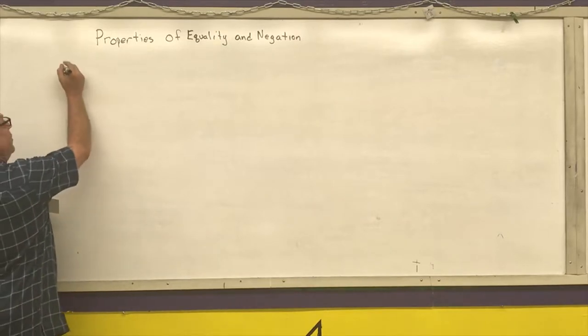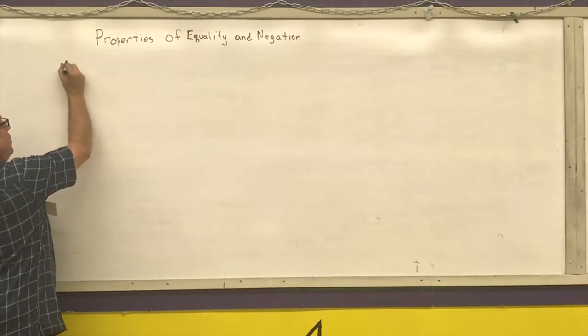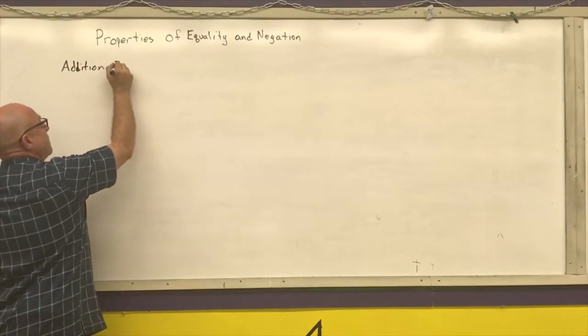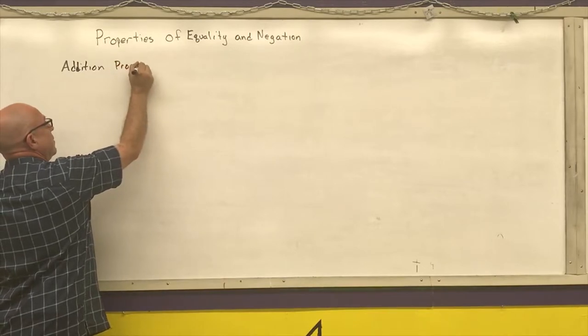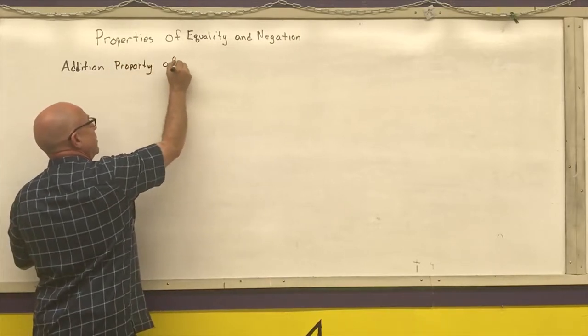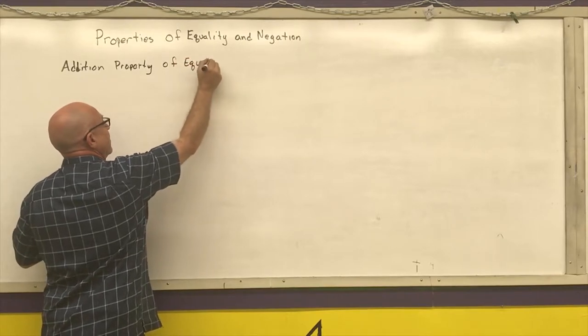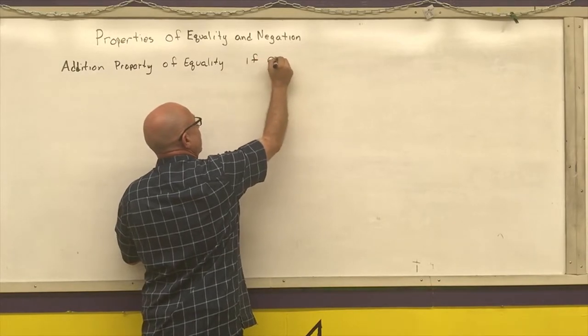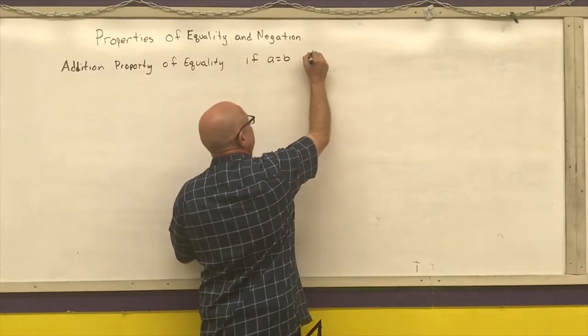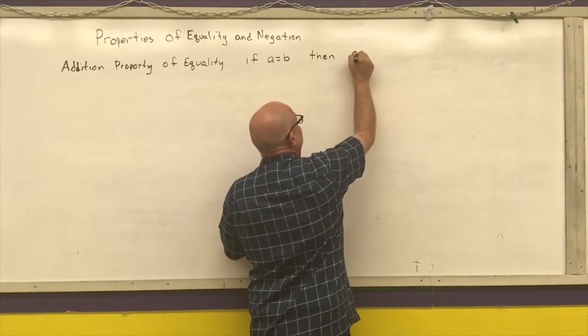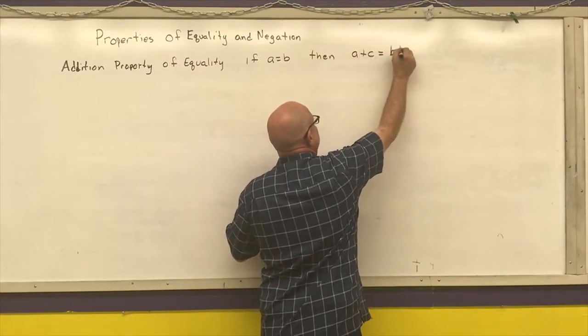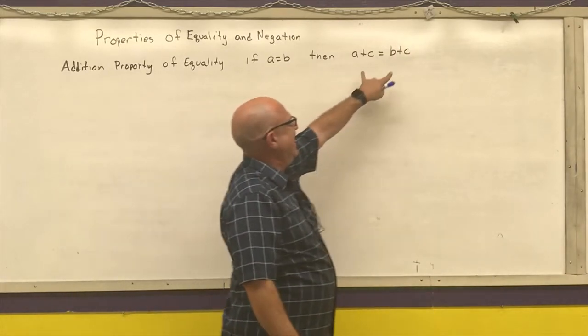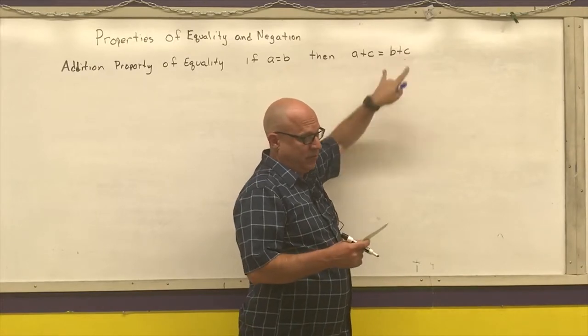So the first one I'm going to put down is the addition property of equality. If A is equal to B, then A plus C is equal to B plus C. That says if I start out with something that's equal, I can add the same thing to both sides of an equation.